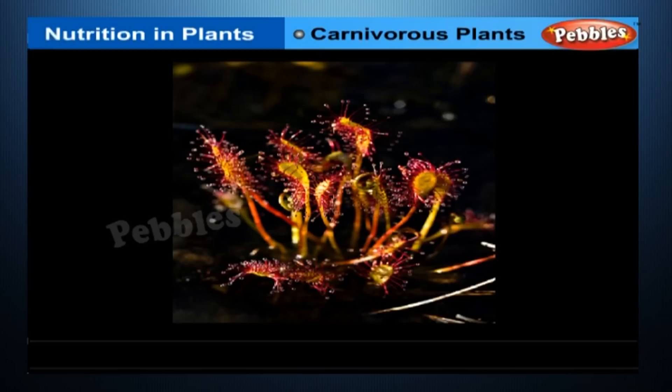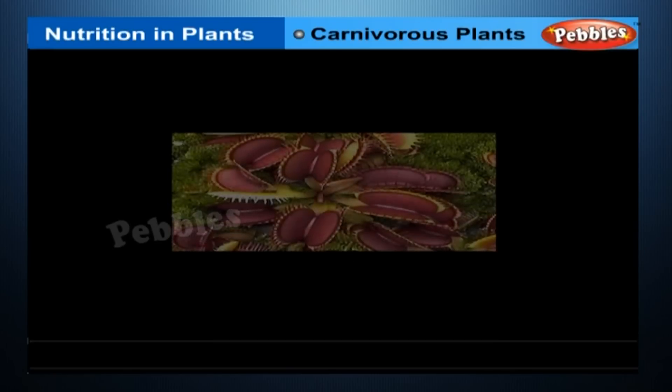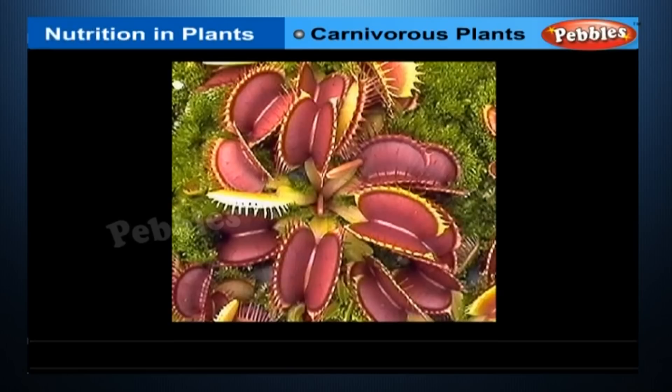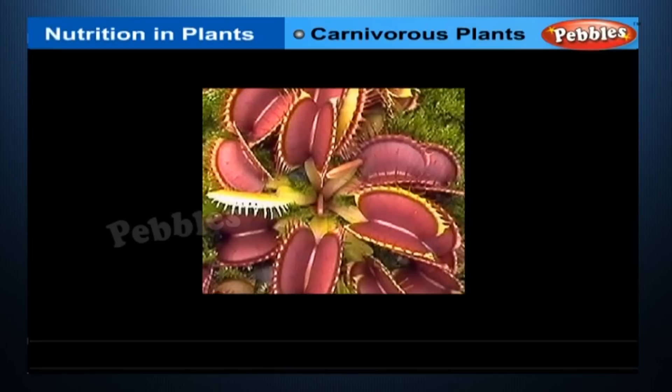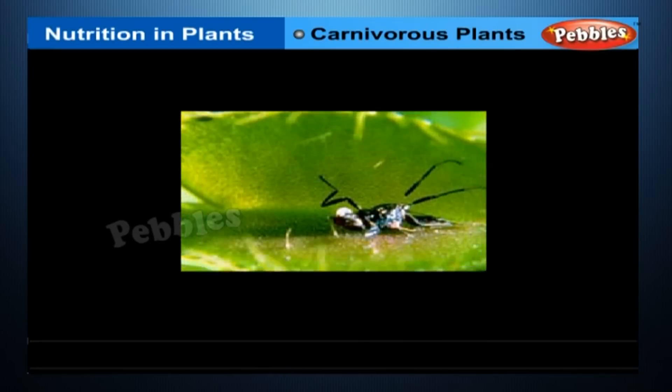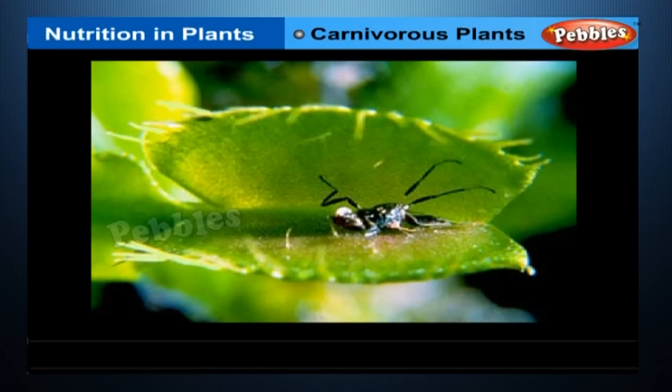The trap of the Venus flytrap is a highly modified leaf. On the inner surface there are reddish hairs to attract insects, and short stiff hairs called trigger or sensitive hairs. When anything touches these hairs enough to bend them, the two lobes of the leaf snap shut in less than a second.